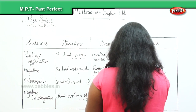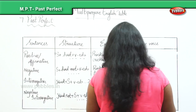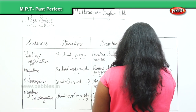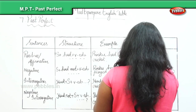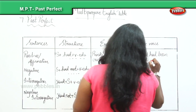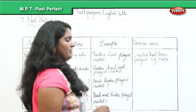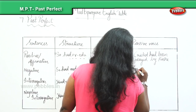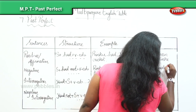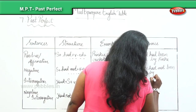Let's convert the same into passive voice. Rinku had played cricket — the passive voice of the same sentence is: Cricket had been played by Rinku. The negative form: Cricket had not been played by Rinku.